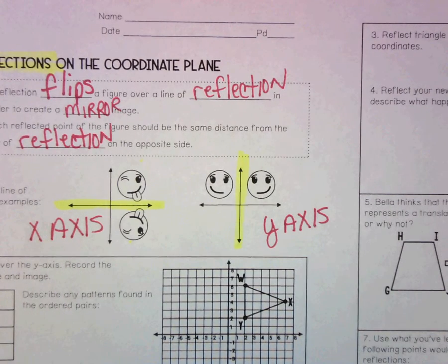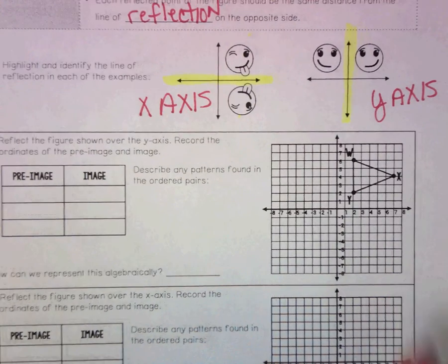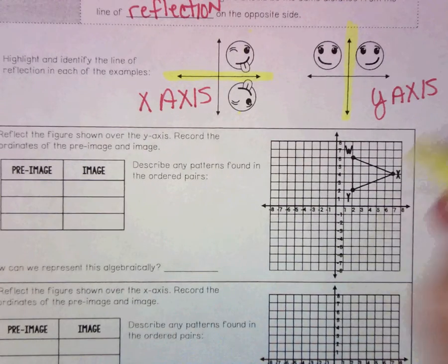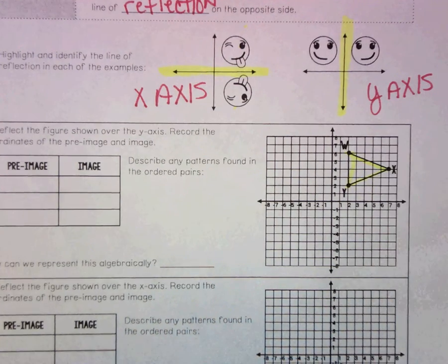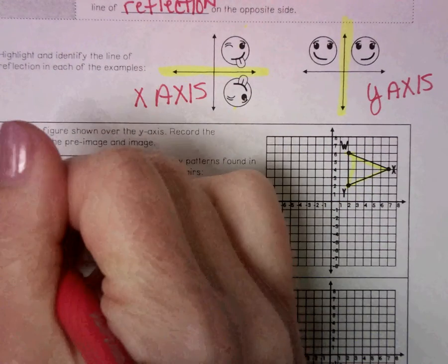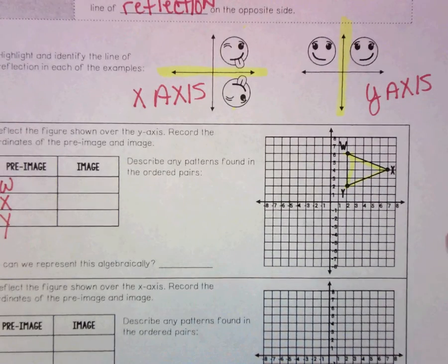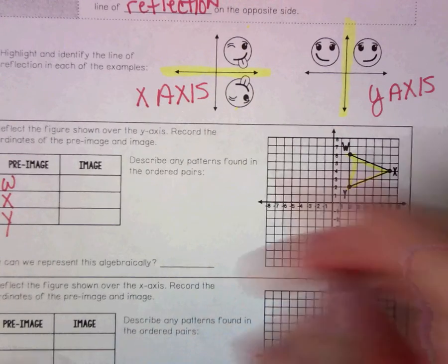Now in example number one, they want us to reflect the figure shown over the y-axis and record our coordinates. I'm going to go ahead and highlight this because this is our pre-image, and we need to write down our coordinates w, x, y for our triangle. Take a minute, you can pause the video if you want and write down your coordinates.